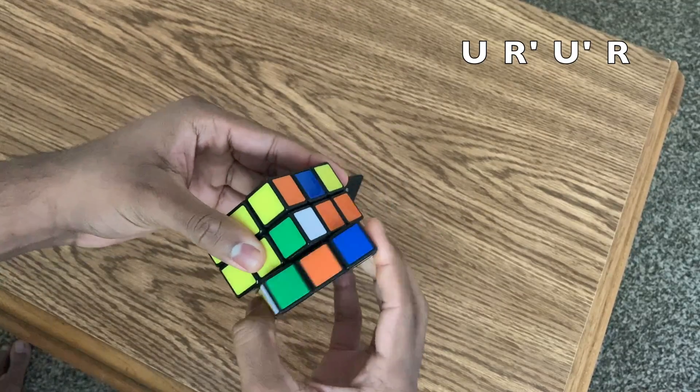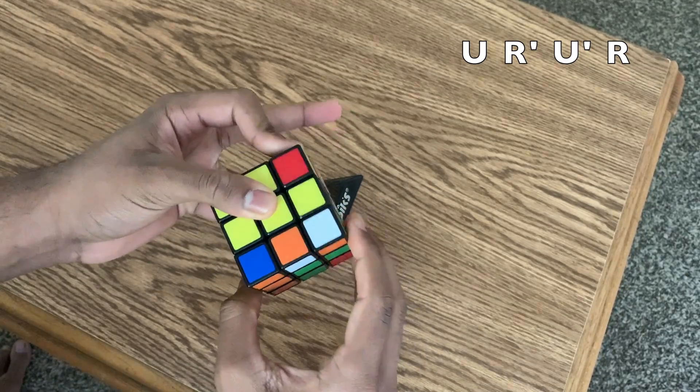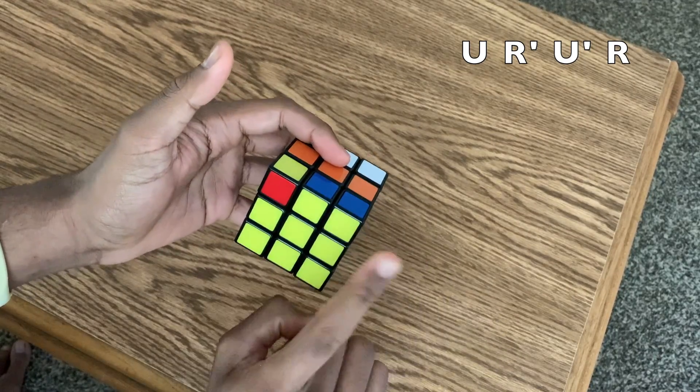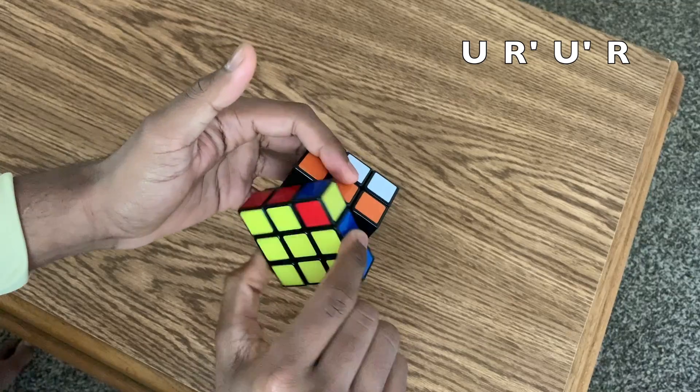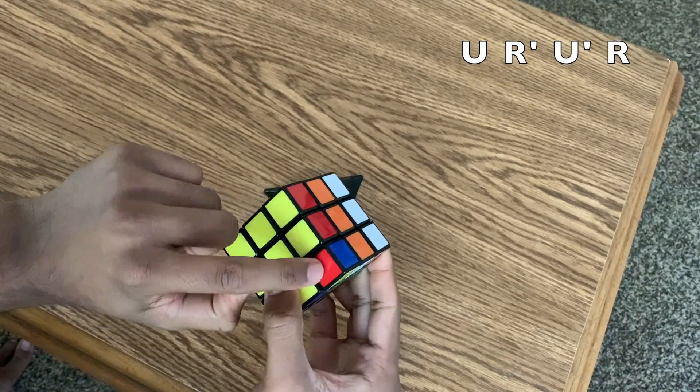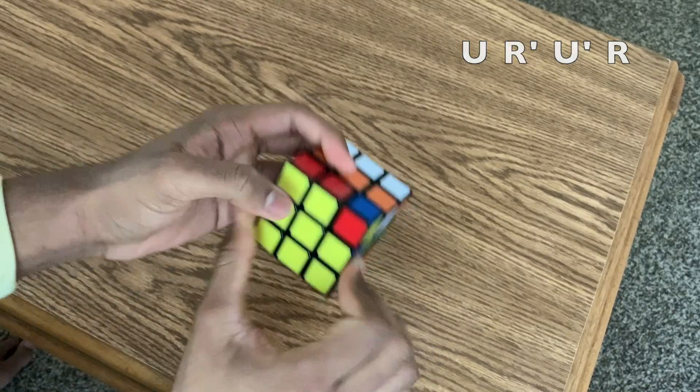U, R apostrophe, U apostrophe, R. U, R apostrophe, U apostrophe, R. See how I completed that algorithm? So don't forget to complete. I'm going to do it until this corner also turns yellow, okay? I'm sorry. Do the front. And now start.